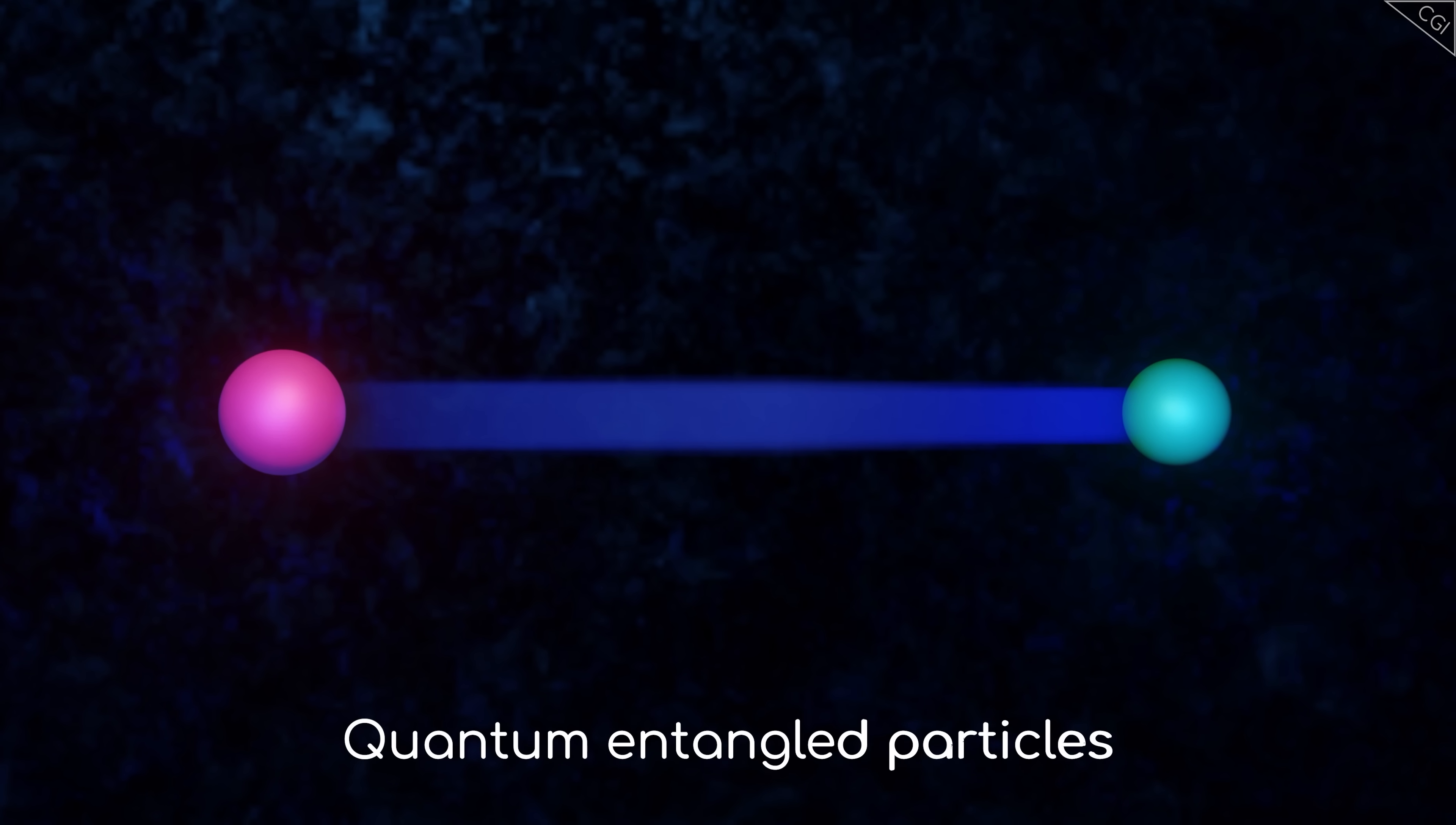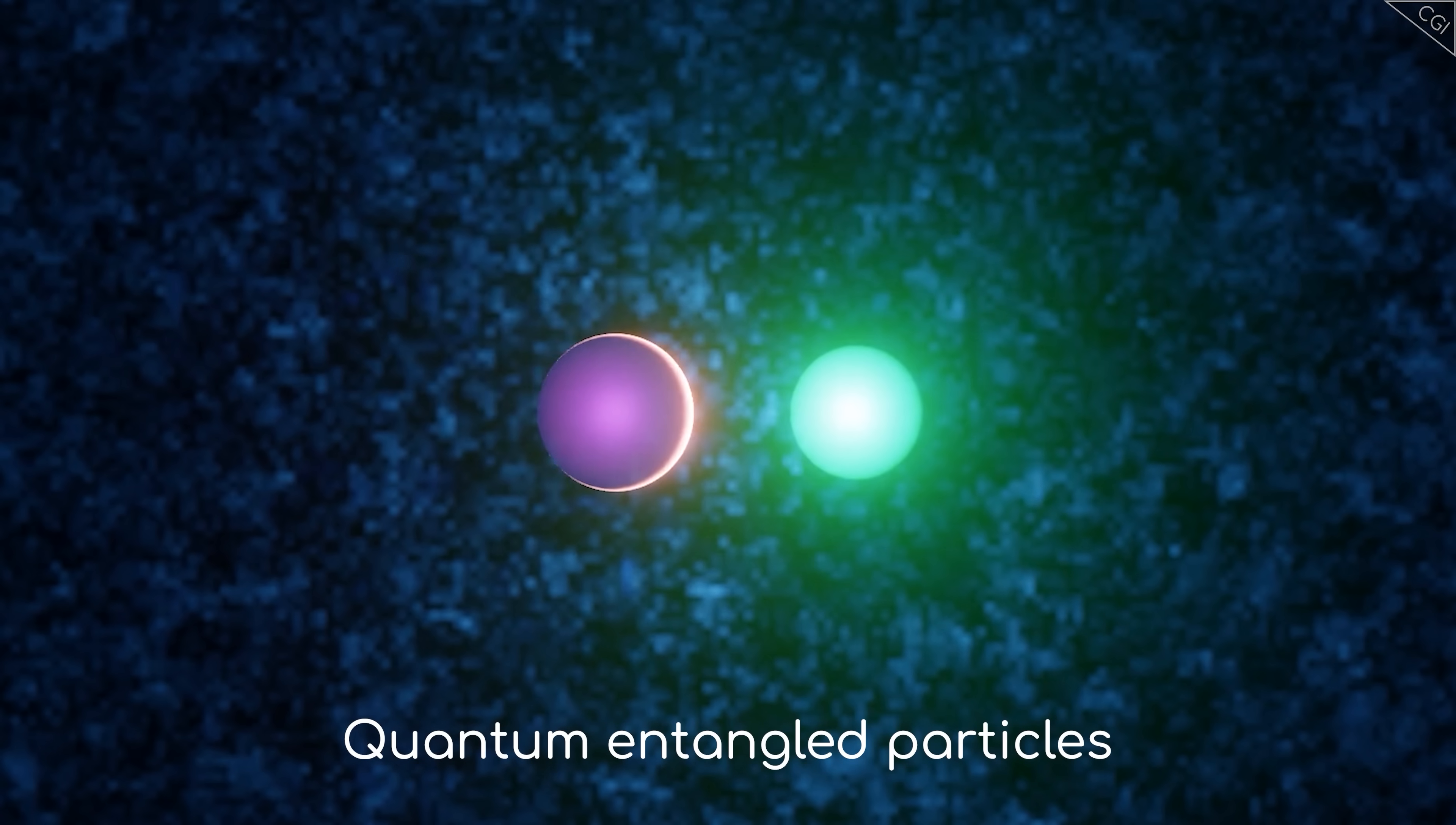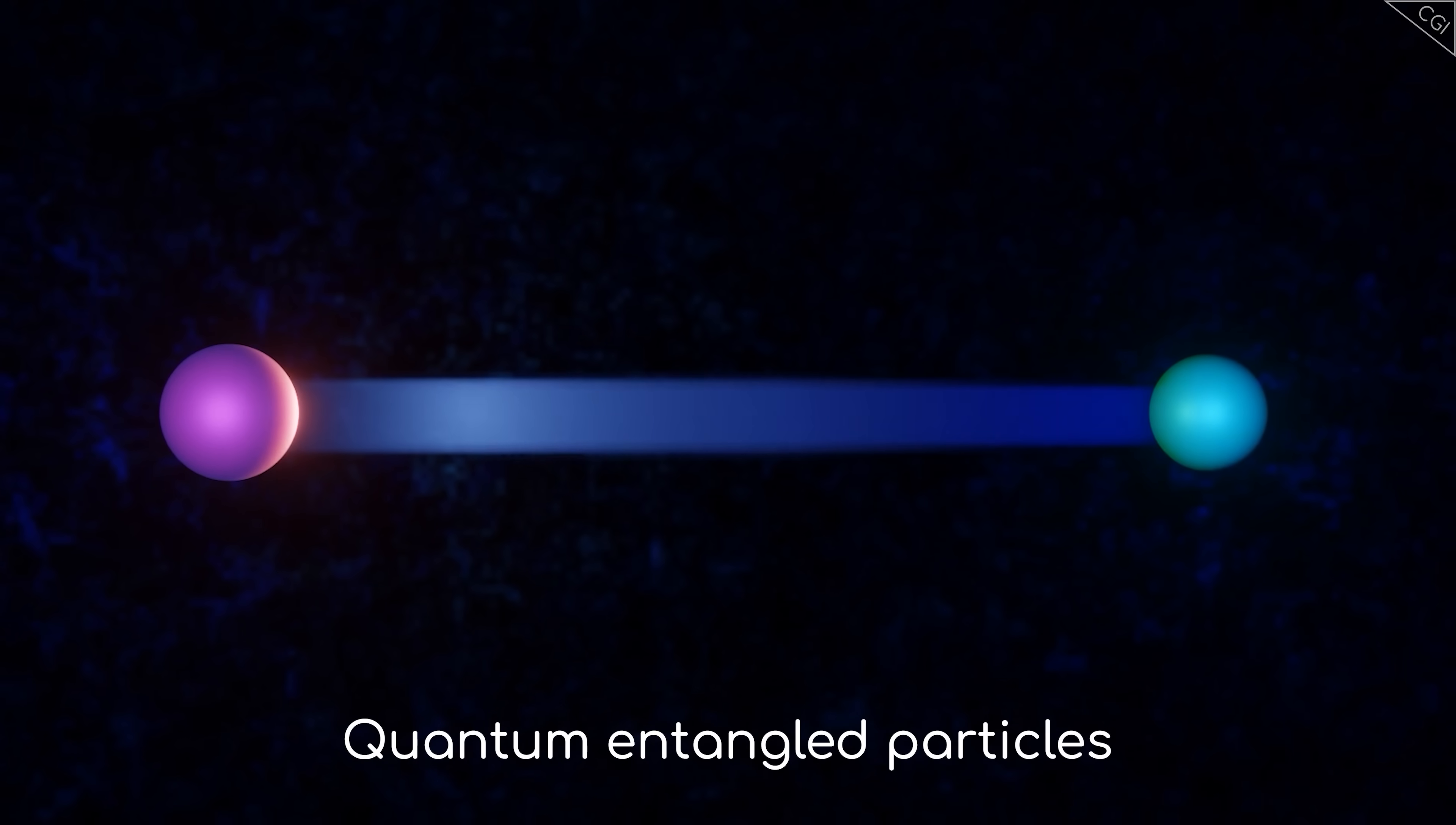What is a quantum entangled particle? In quantum physics, it's possible to hit two particles together in such a way as to link them together, so that by measuring the one particle, you learn things about the other.